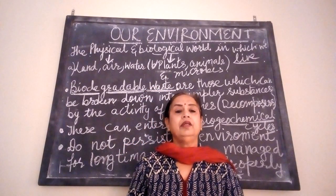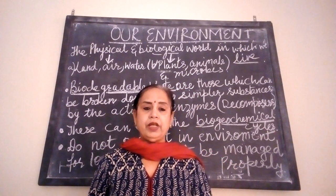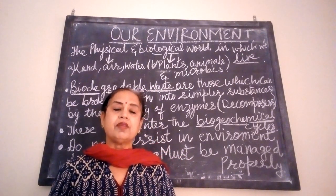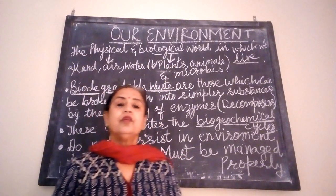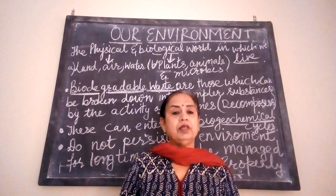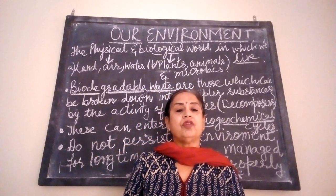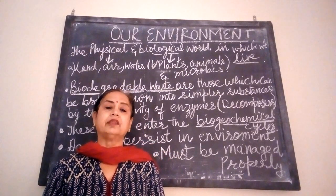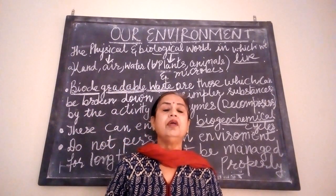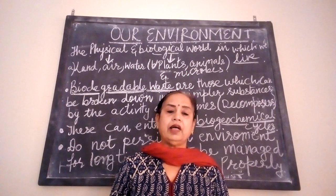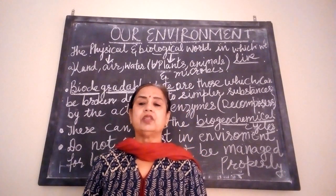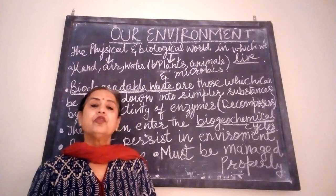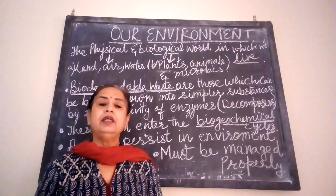Hello children, today's topic is the types of waste generated in an ecosystem, or the types of waste present in our environment. Plants and animals in the ecosystem are utilizing natural materials for their metabolic activities, and human beings are utilizing these for many other activities like industrialization, the transport industry, and factories. So a lot of waste is being generated.